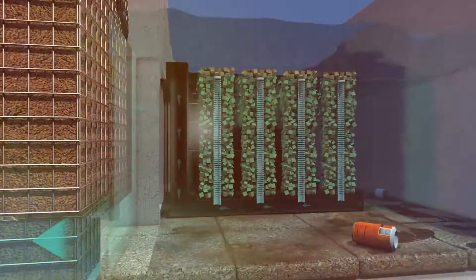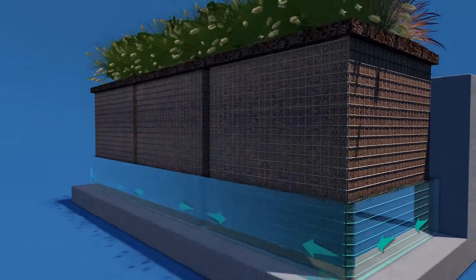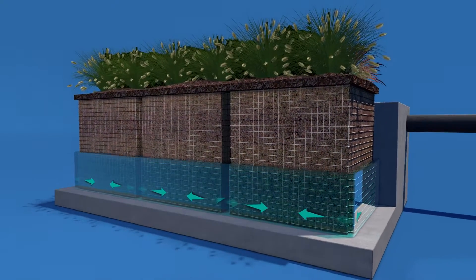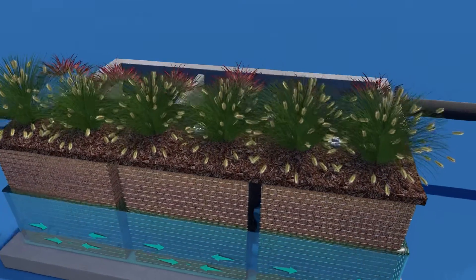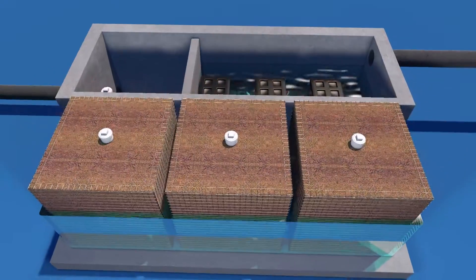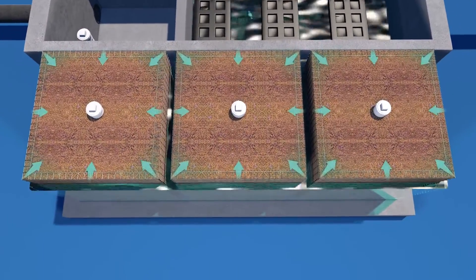Stormwater is then conveyed into the main treatment chamber through a flow network found only in the modular wetlands linear. As the water level in the chamber's perimeter void area rises, the hydraulic head pressure allows water to pass through the bioretention media from all four sides.